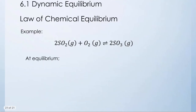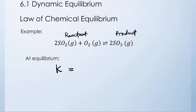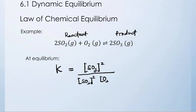Let's look at an example of writing an equilibrium constant expression. Given the equation shown, the left side is the reactant and the right side is the product. At equilibrium, K is equal to the concentration of SO3 raised to the power of 2, divided by the concentration of SO2 raised to the power of 2, times the concentration of O2. That's all for this video. We will continue in the next video discussing the equilibrium constant. See you and bye-bye.